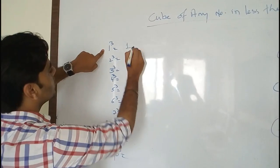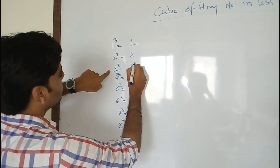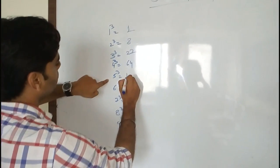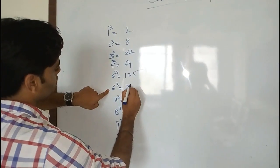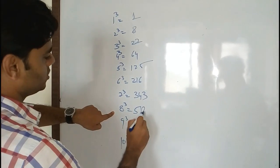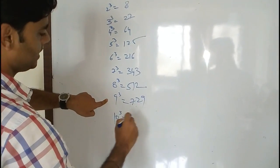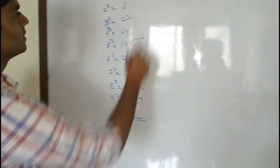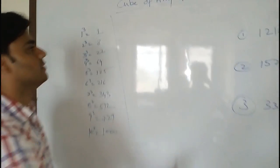So one cube is 1, two cube is 8, 27, 64, 125, 216, 343, 512, 729, and 1000. So after that, this is the first step.